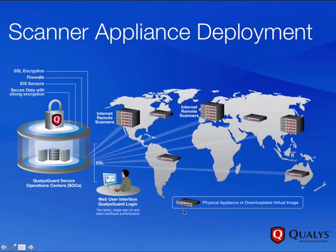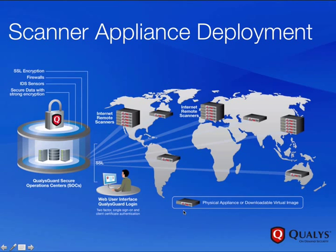Any time I'm launching a scan as a user, the job gets set up within my account in the Qualys SOC. The scan is then sent to the scanner appliance I've chosen for the job. If I choose to use an external scanner, it will use one of the shared or pooled scanner appliances Qualys has within the Secure Operations Center. If I choose an internal appliance, the service will send the job to the specific scanner appliance or appliances I've selected for that job.